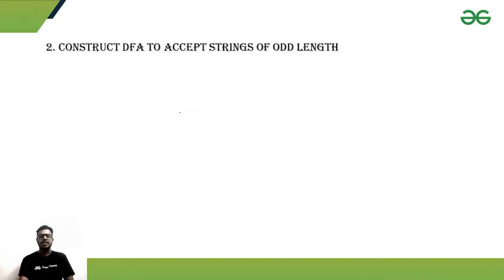Now going to the next question: construct a DFA where it will accept the odd length strings. Odd length strings means it should accept the strings with length one, three, five, seven, etc.